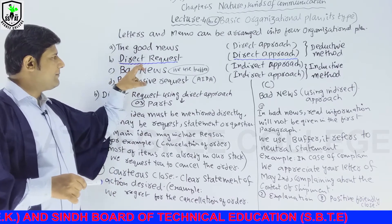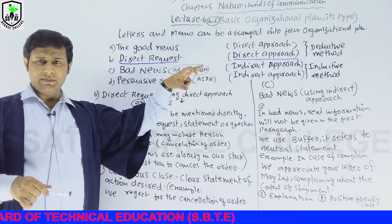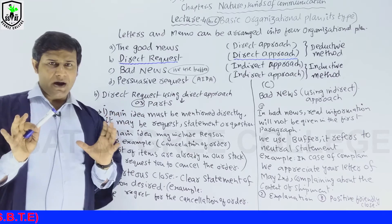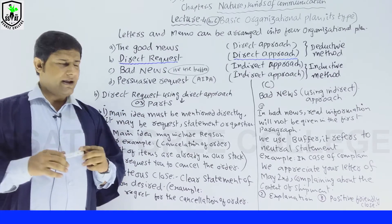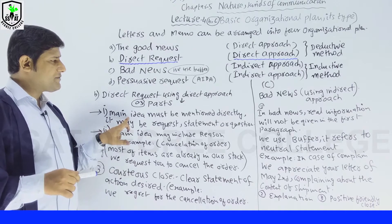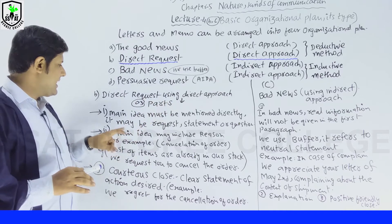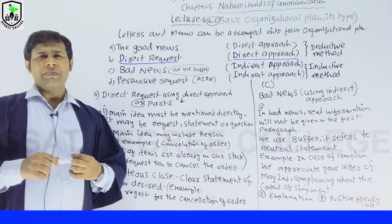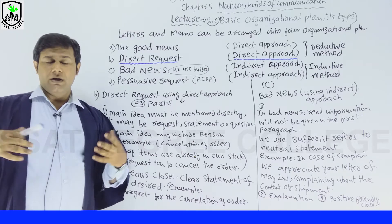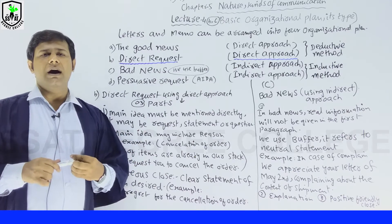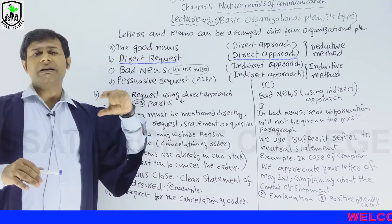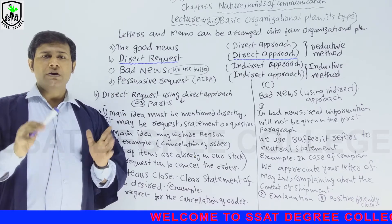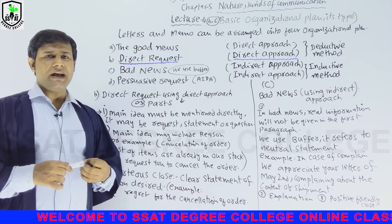Part B is direct request using the direct approach, which is the deductive method. The first key point is that the main idea must be mentioned directly — it may be a request statement or a question. In any business letter, memo, or sales letter, whether giving good news, a request, or any statement, we must mention it clearly in our first paragraph.